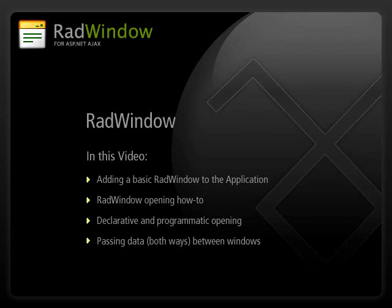Have you ever wished that you could open windows on a web form the same way that you can in Windows application programming? The RAD window control now makes this ability available with very little effort. In this video, we'll demonstrate how to populate a RAD window object and place it on the page, how to display it when the page loads and in response to user input, how to control the window positioning, and how to collect and return data to the underlying window — and we do this without any server-side code at all.